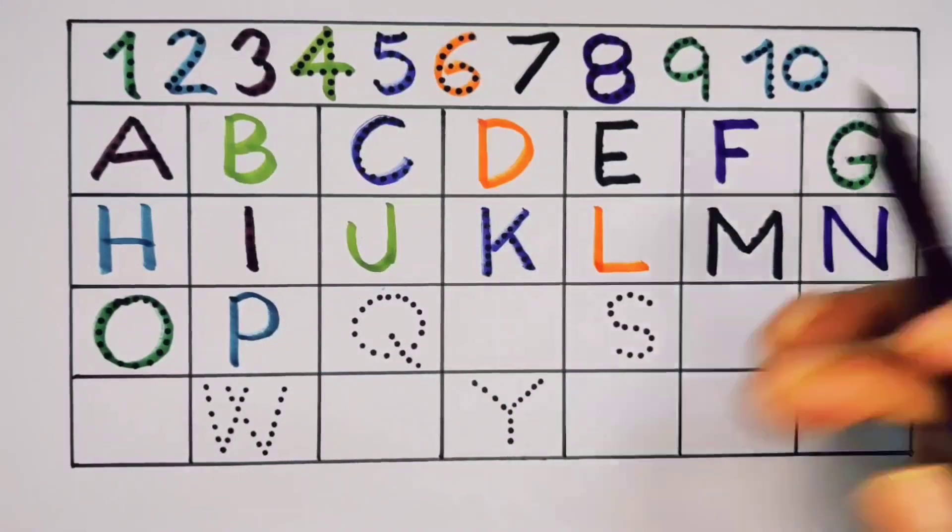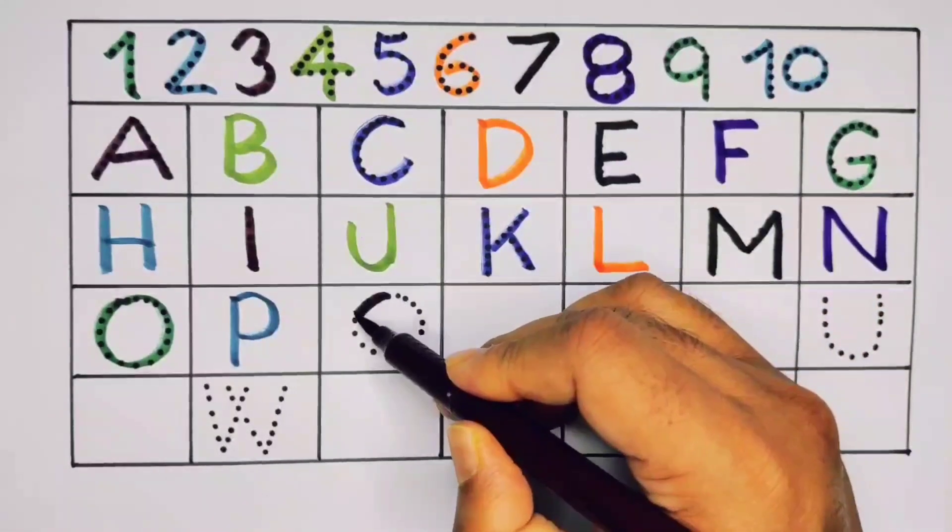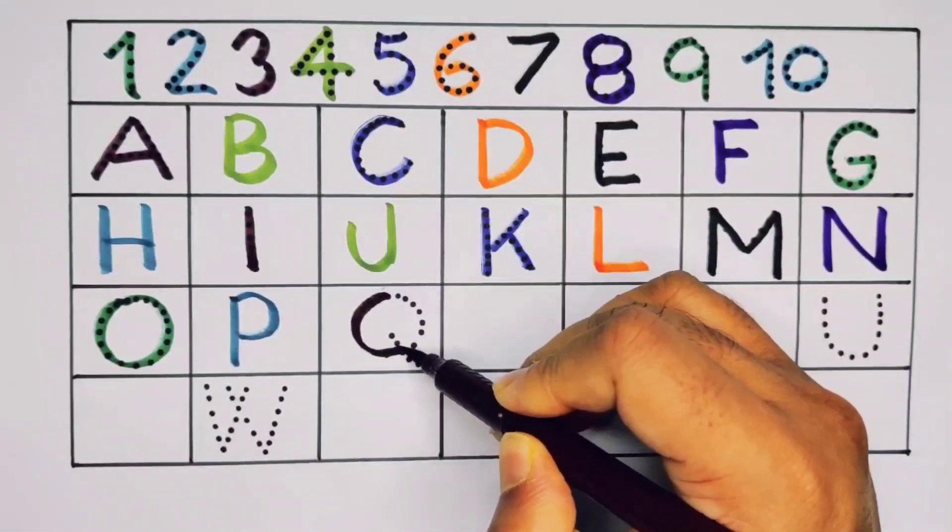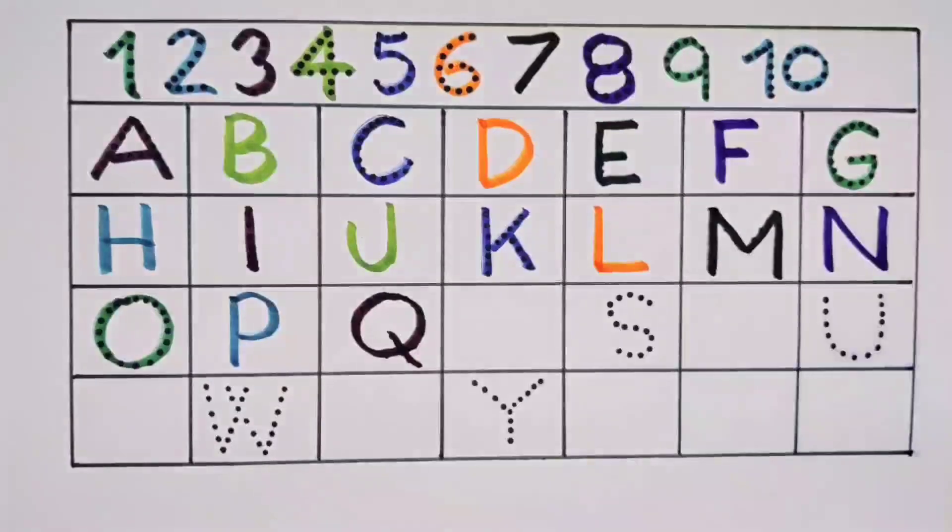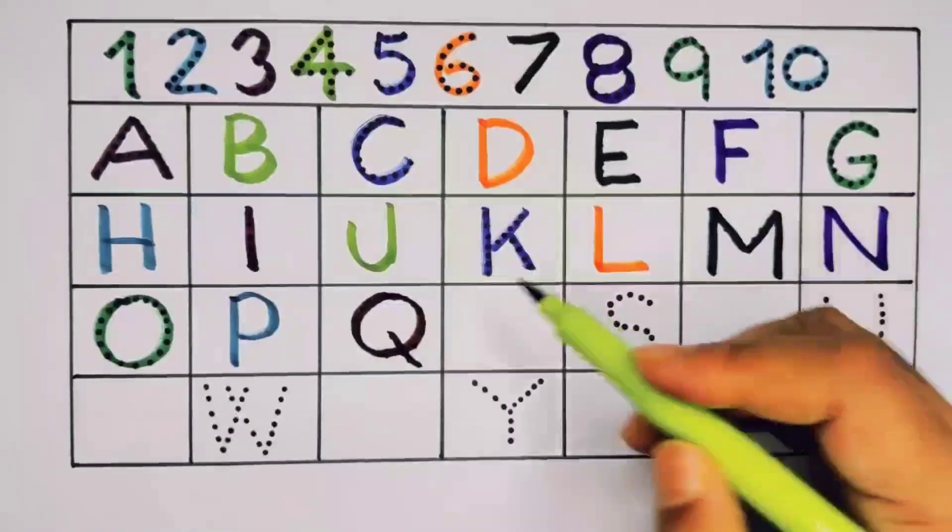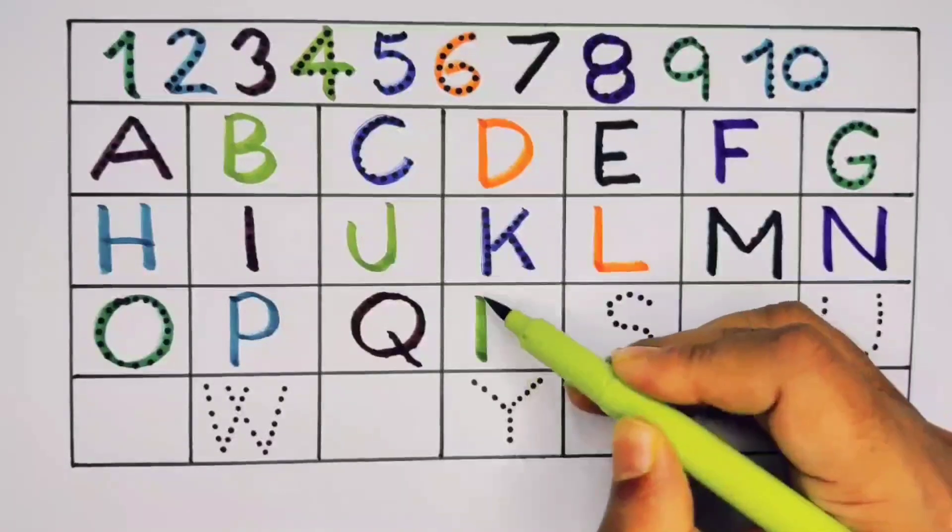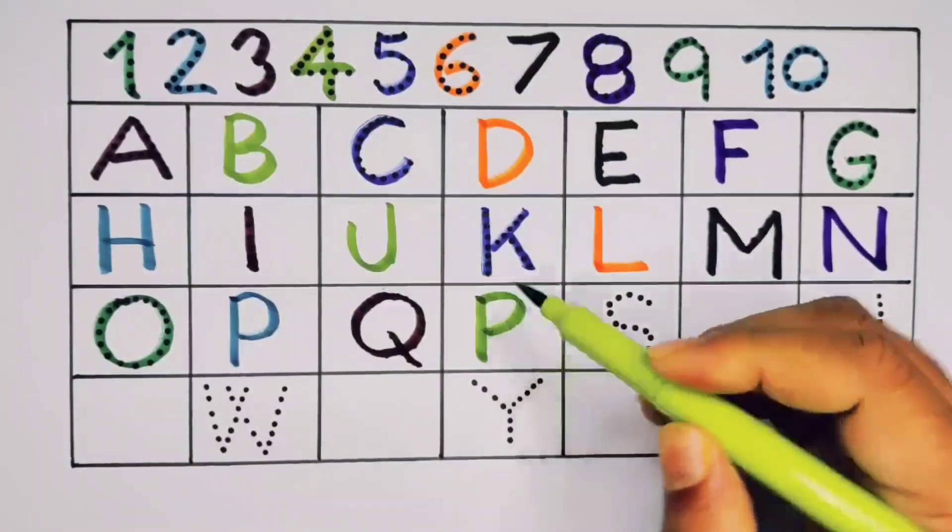Now Q. Q for queen. Q for queen. What will next? This is R. R for rat. R for rat.